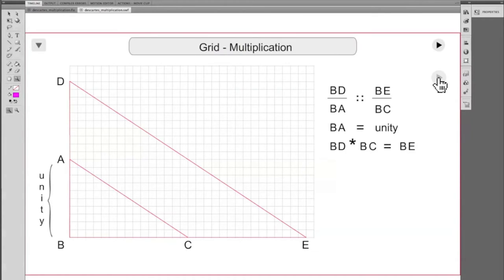These are similar triangles, and a Euclidean proportion applies. BD is to BA as BE is to BC.